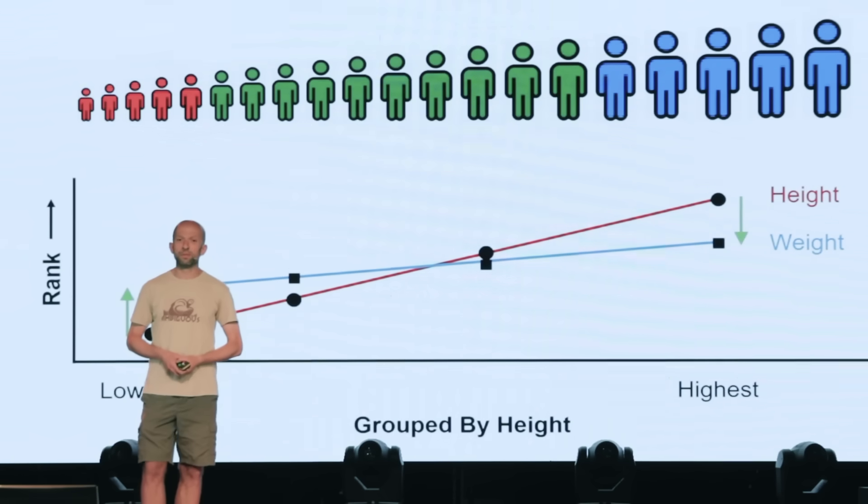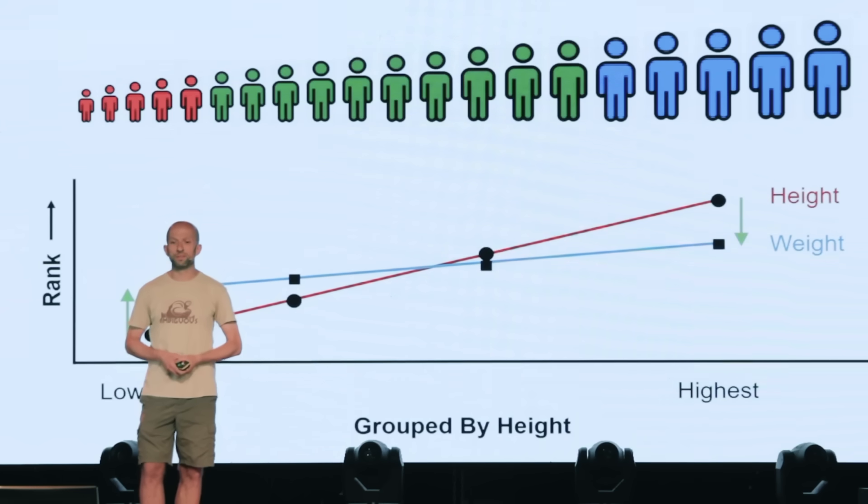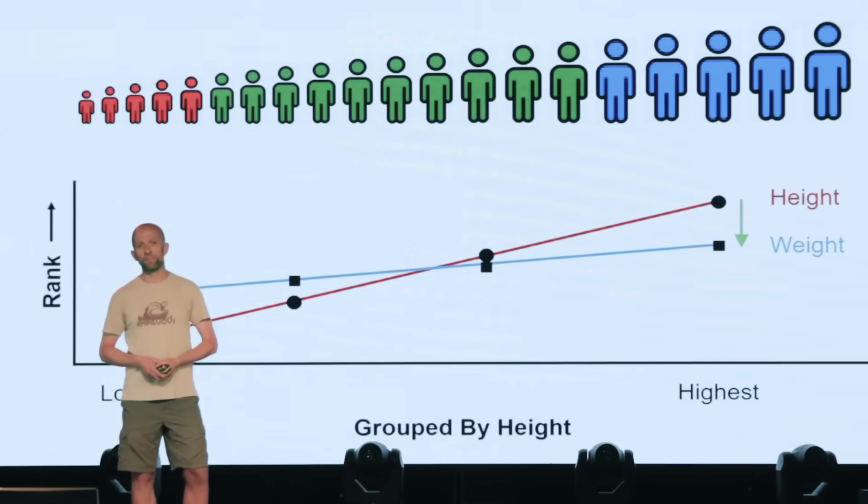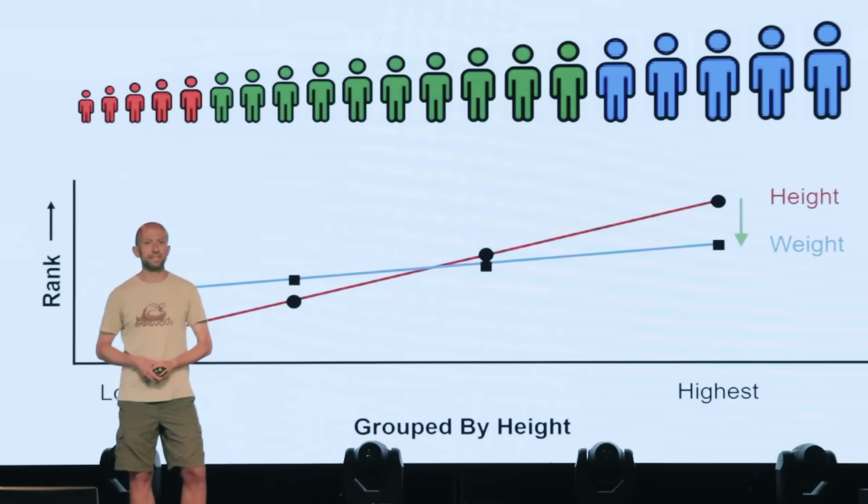Now, some people might put forward a spurious explanation for why short people are relatively overweight or tall people are relatively underweight, when in fact no explanation is needed.